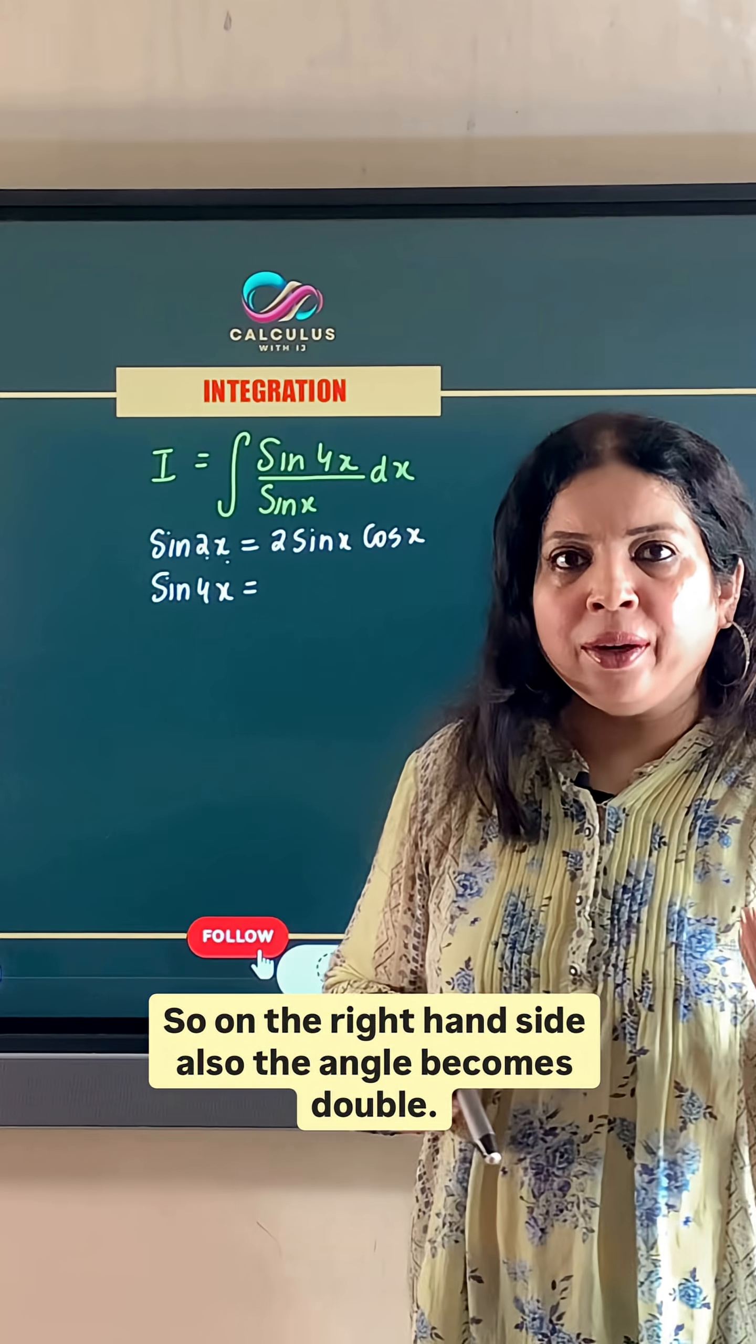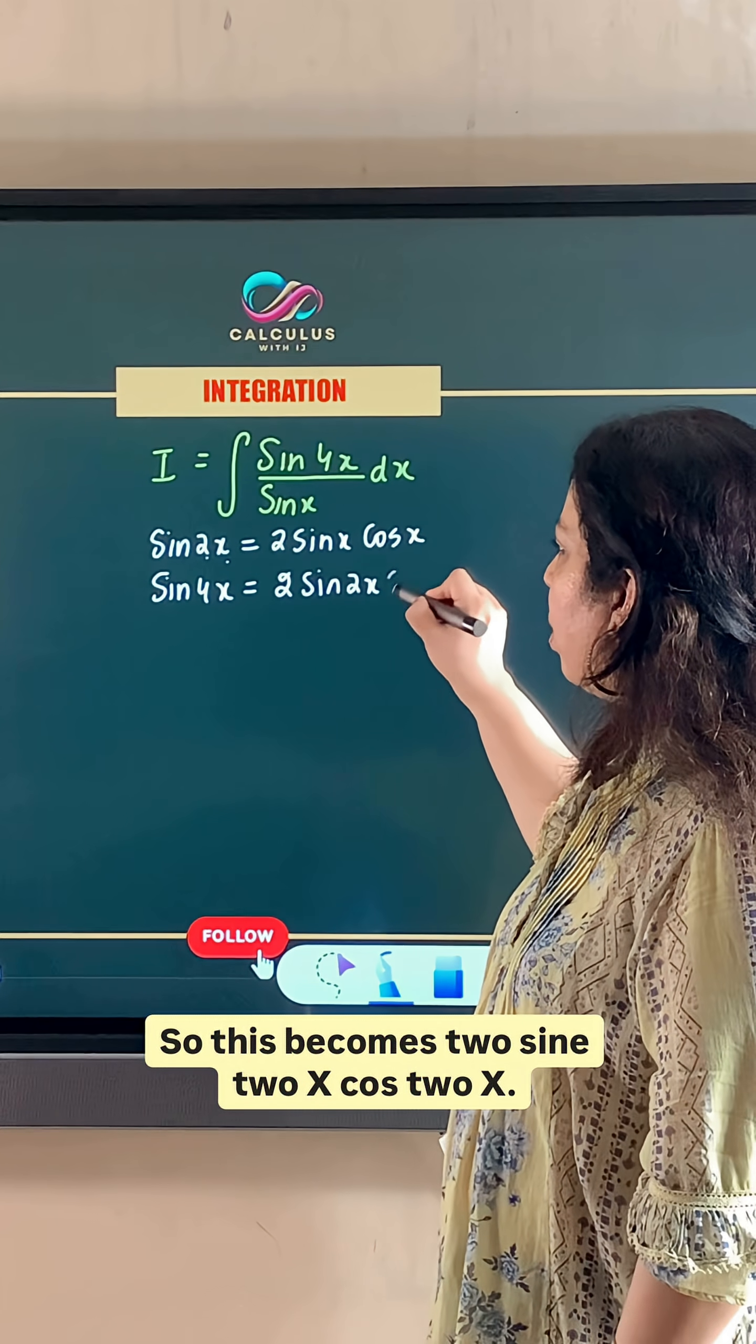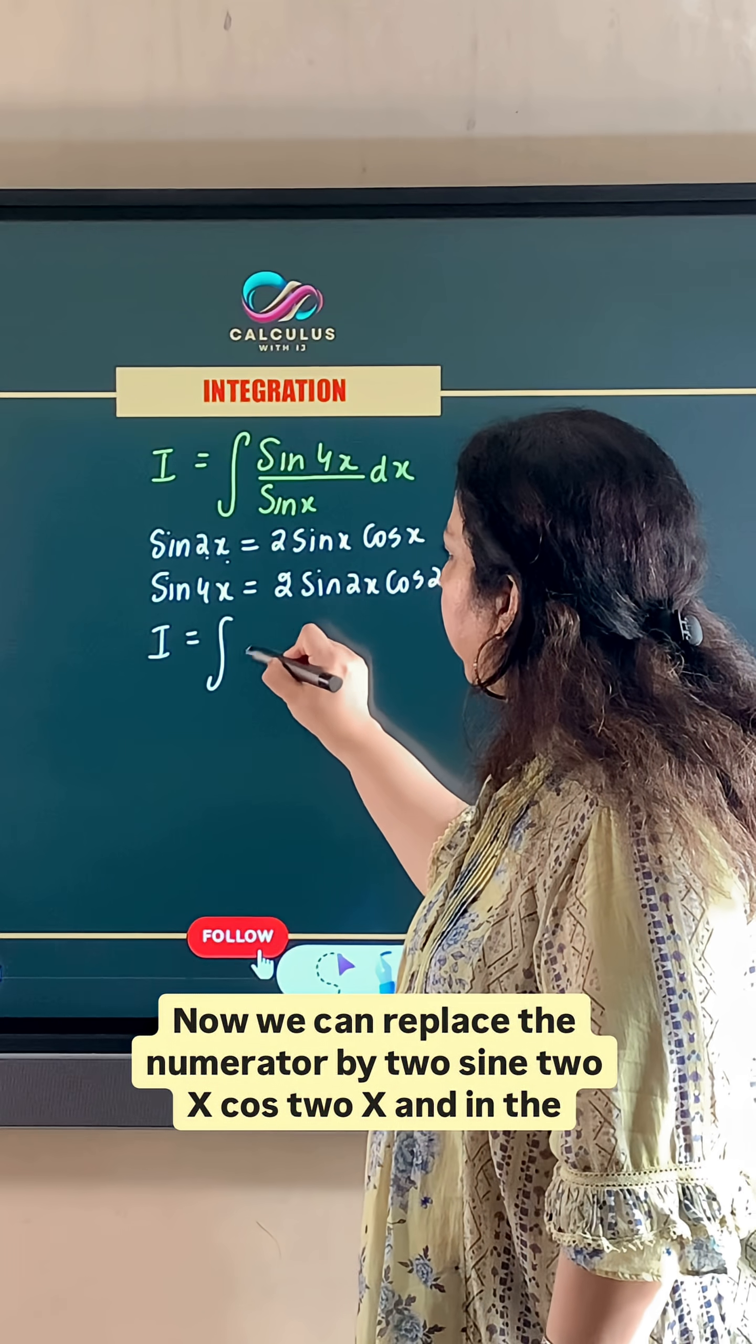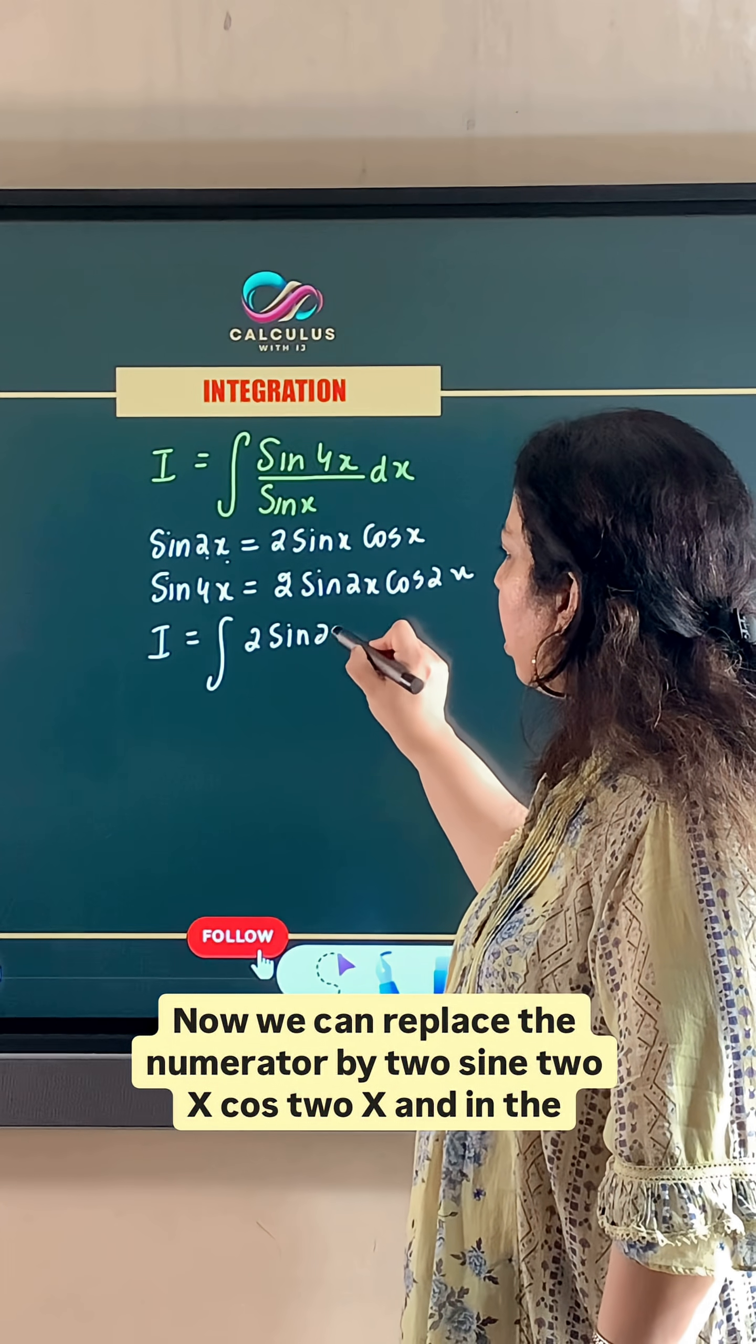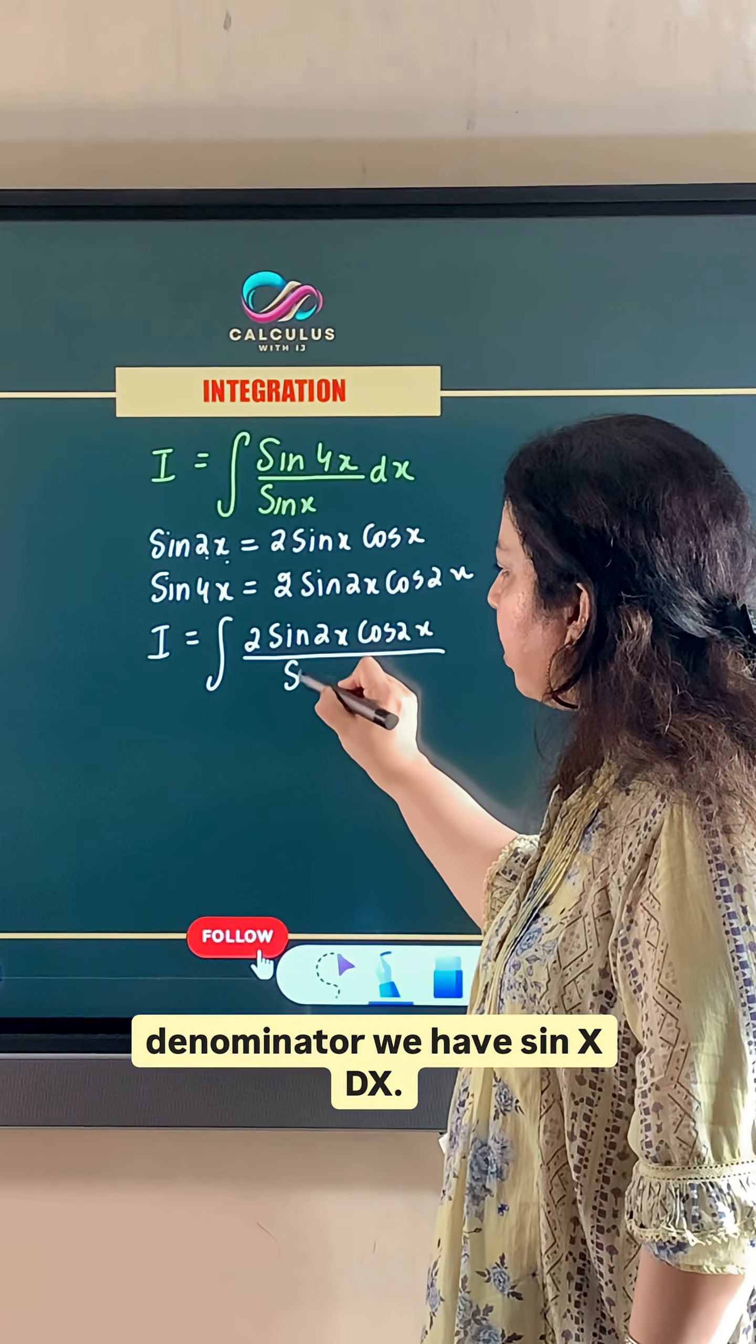So on the right-hand side also, the angle becomes double. So this becomes 2 sin 2x cos 2x. Now we can replace the numerator by 2 sin 2x cos 2x. And in the denominator, we have sin x dx.